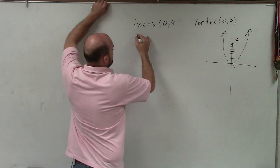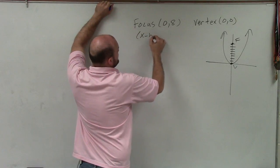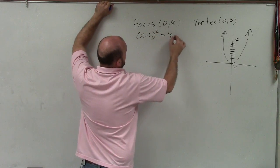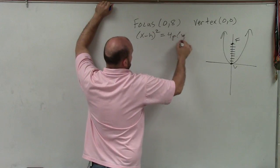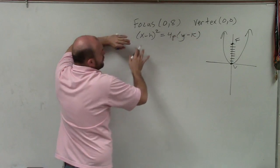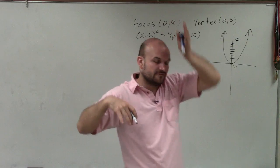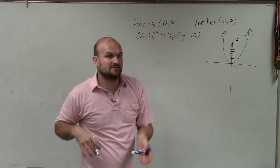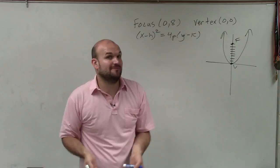So therefore, the standard form that I'm going to use is x minus h squared equals 4p times y minus k. This is the standard form for any time you have a vertical axis of symmetry, or in other terms, your graph opens up or down.